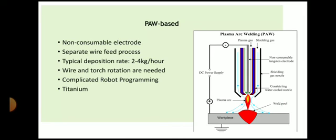Plasma arc welding (PAW) can also be used to deposit material. Here again we use a non-consumable tungsten electrode and a separate filler material. The deposition rate is 2 to 4 kg per hour, so we get a good deposition rate. Again, we have to control two different parameters — the torch as well as the filler material — making the programming of this method complicated. This process is suitable for depositing titanium.